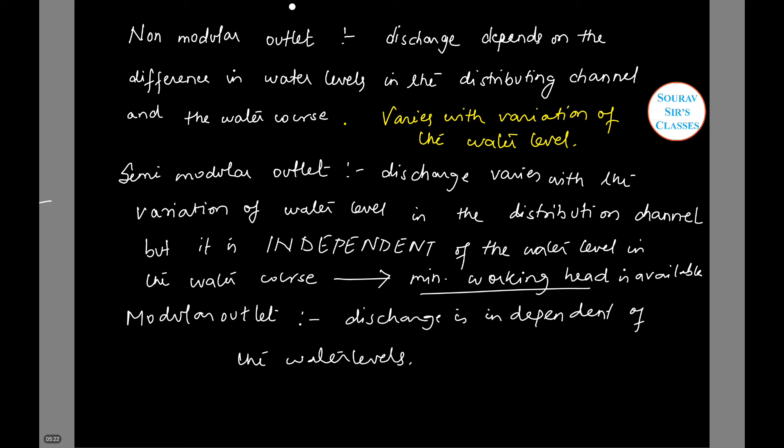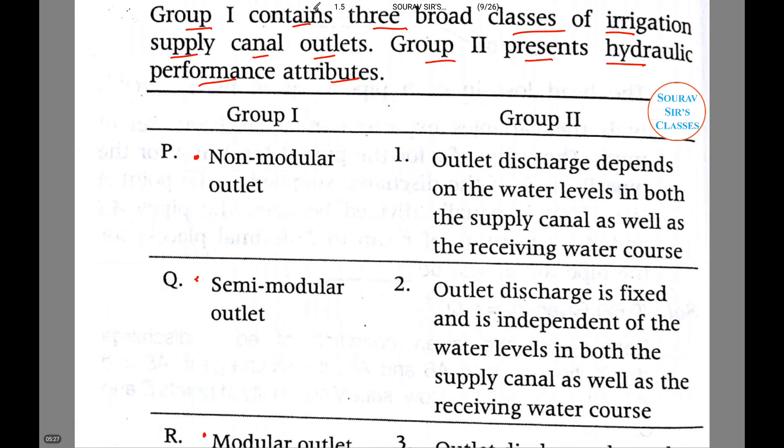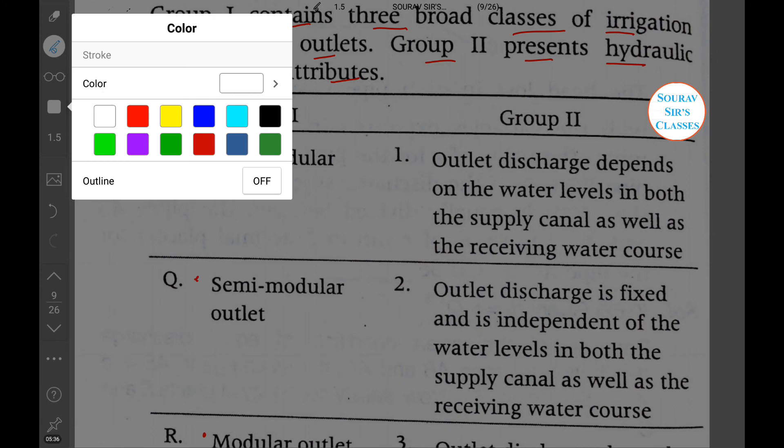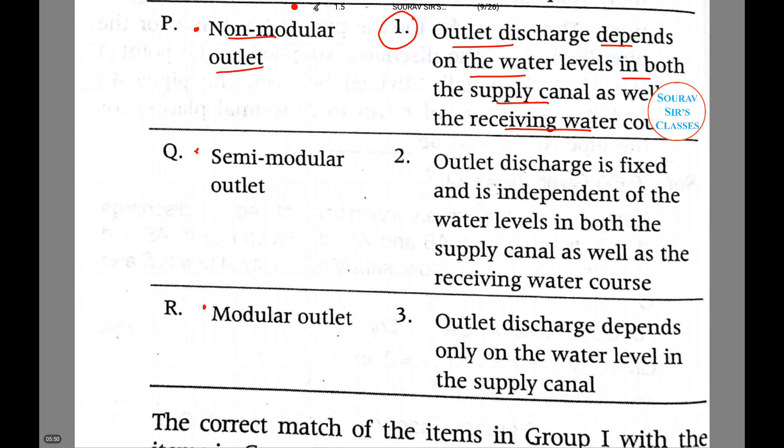Now, having said that, let us match the two columns. We can clearly say that for non-modular outlet, the correct option will be 1: outlet discharge depends on water level in both supply canal as well as receiving water course. Modular outlet is independent of water level, so R will match with 3. And the remaining Q matches with 2.